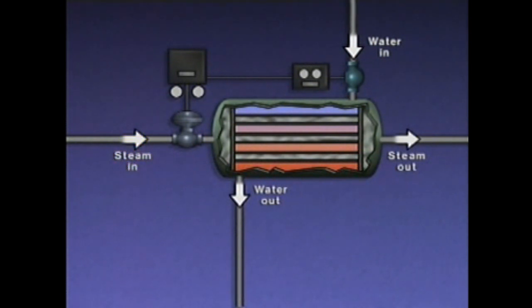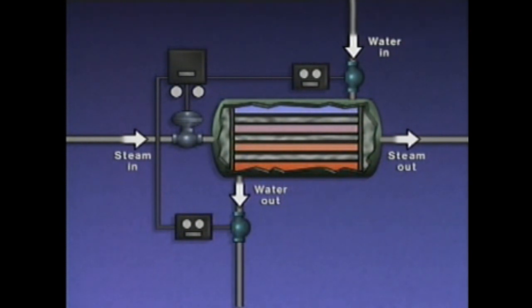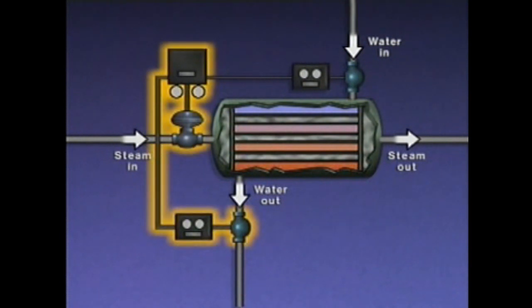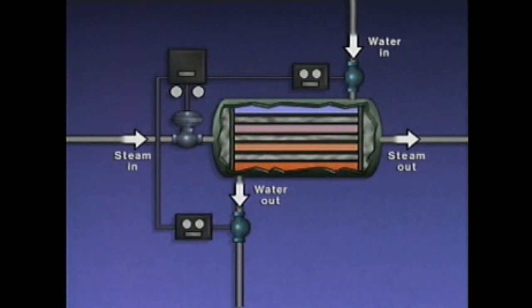To correct for those types of disturbances, a combination of feedback and feed-forward control could be used. With combined control, the feed-forward part responds to changes in the inlet water temperature, while the feedback part responds to changes in the outlet water temperature caused by other disturbances. By combining both methods, greater control over disturbances upstream of the process and within the process can be attained. In this topic, we saw how the four elements of an automatic control system work together, how a control system responds to a process disturbance, and how feedback, feed-forward, and combined control methods work.